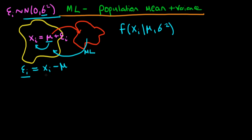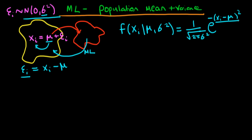So the likelihood function for xᵢ minus μ is just the typical probability distribution for a normal distribution: 1 over the square root of 2π times σ², where we've divided through by σ² to standardize it, times e to the power of minus (xᵢ minus μ)² divided by 2σ².